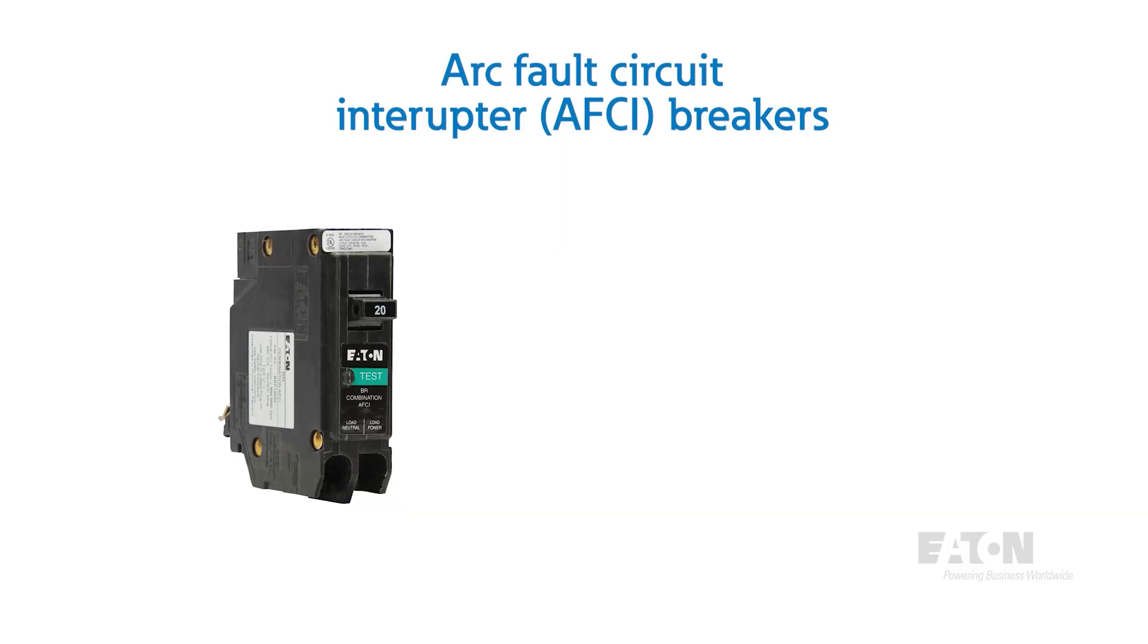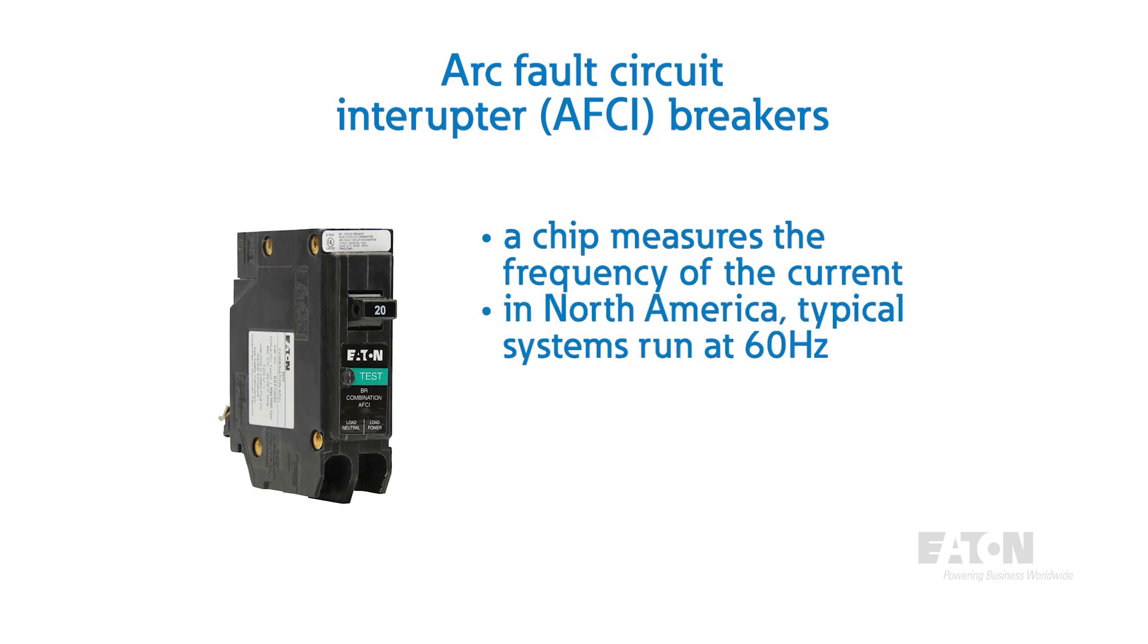To detect these, special arc fault breakers use a small chip that calculates the frequency of the current. In North America, our systems run at a clean 60 hertz. However, arcing is a very noisy process and will create frequency signatures in the megahertz range, or thousands of times higher than what should be on the circuit.